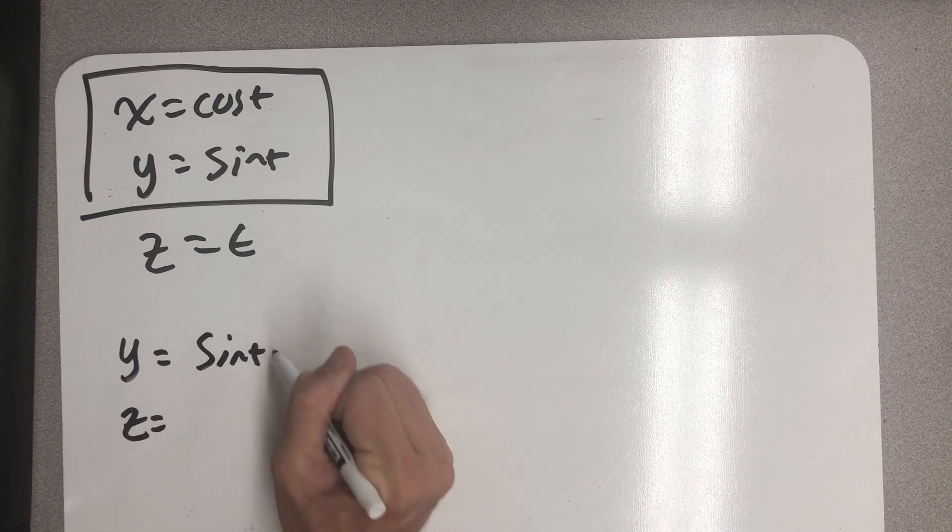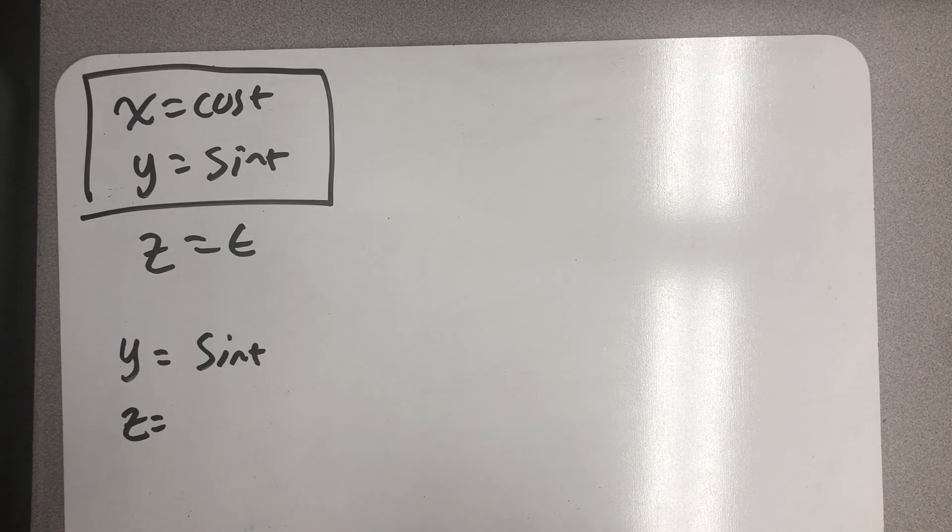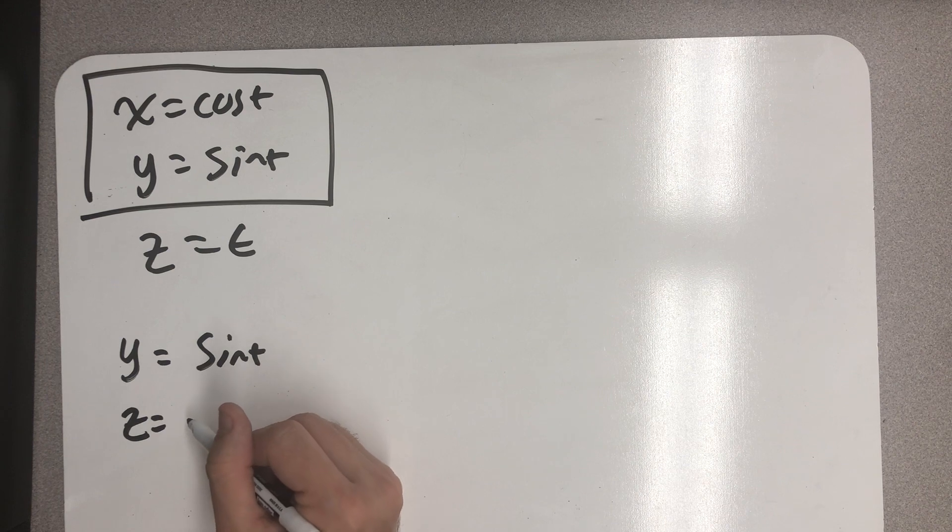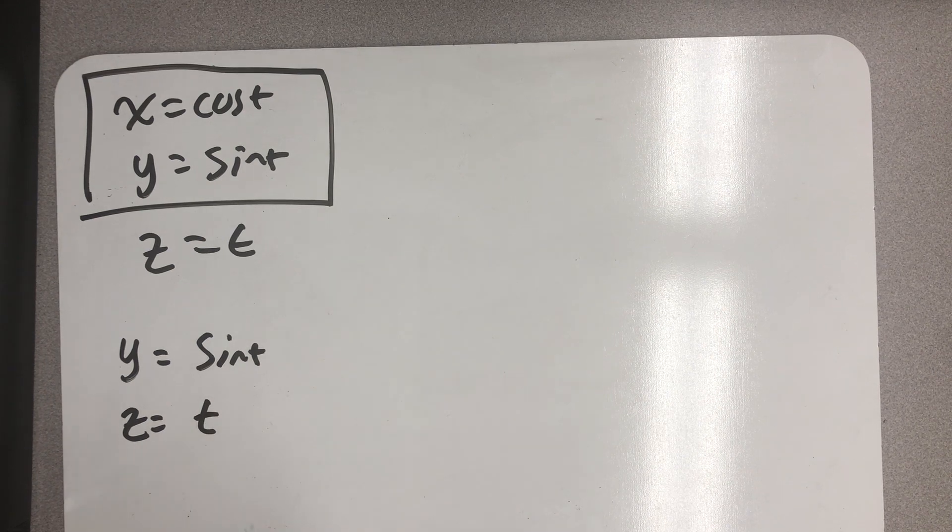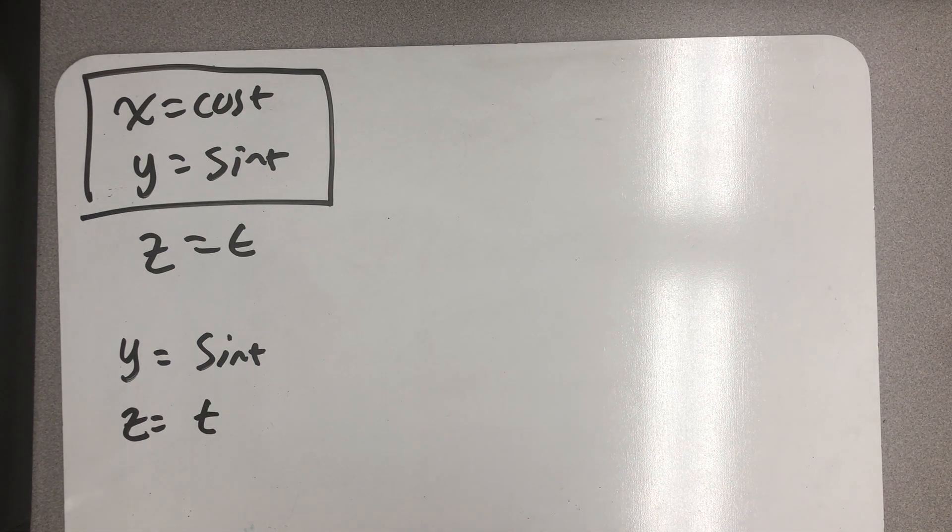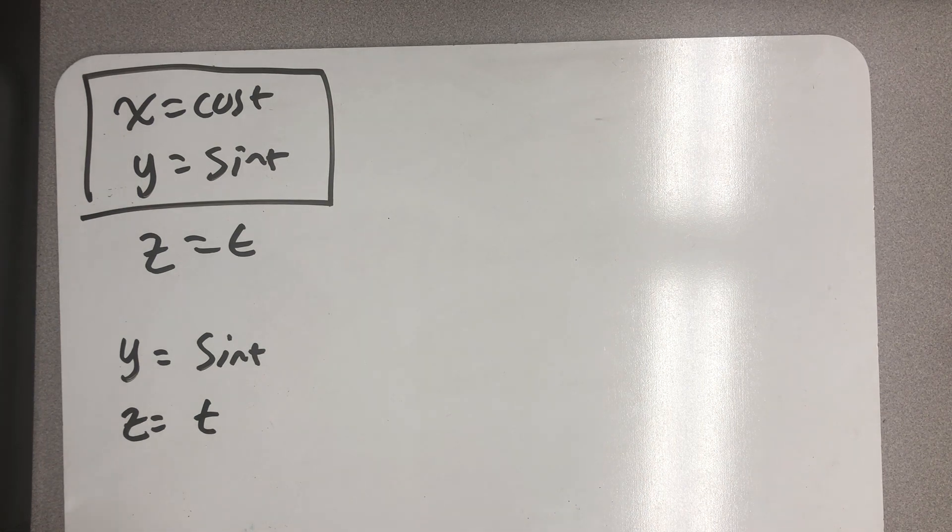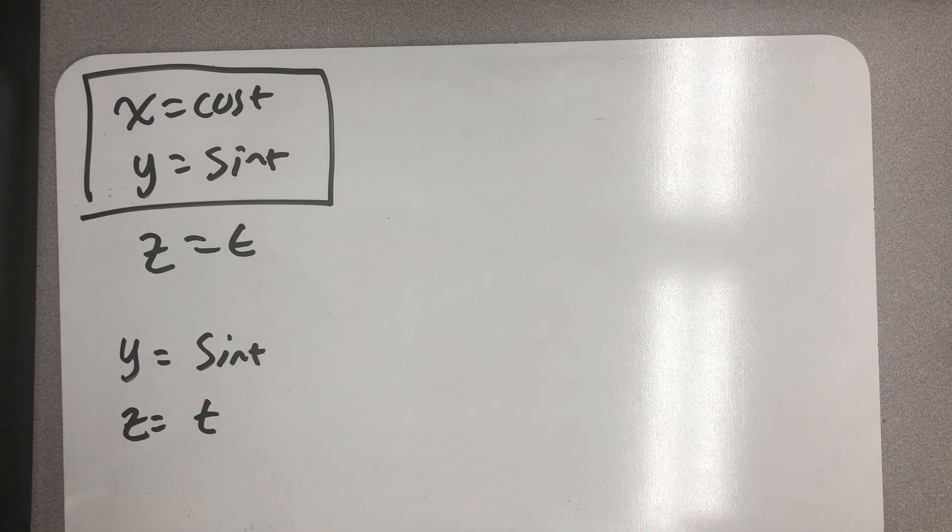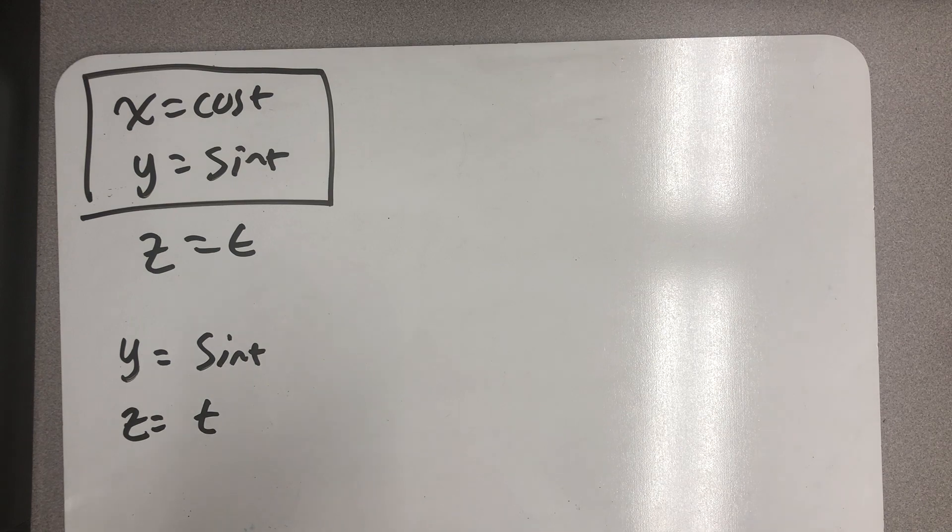What I'd like to do now is think about what happens if I think about the y and z equations together, right? Like I was looking straight down the x axis and I only was able to observe the behavior in the y, z direction. Well, in the y, z direction, the z axis is just t and the y axis is sine. So I should see something that looks like a sine wave, except for going up the z axis.